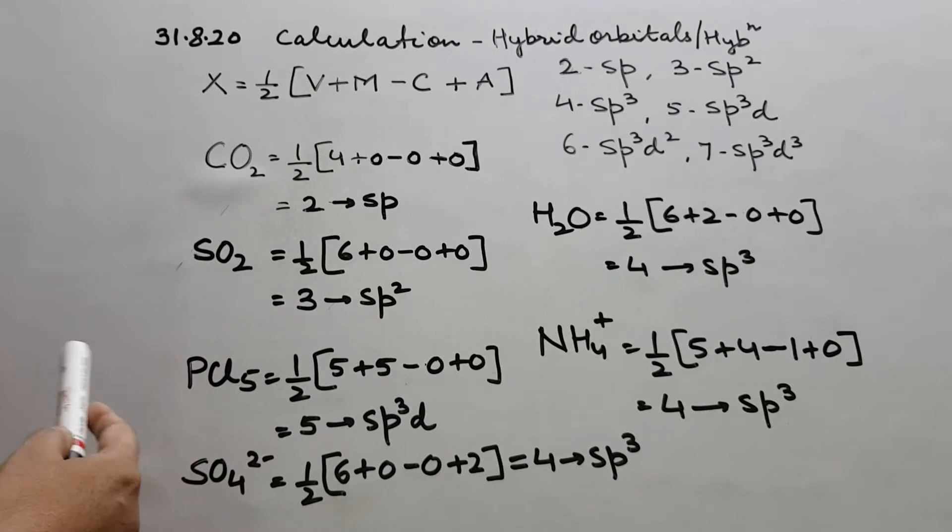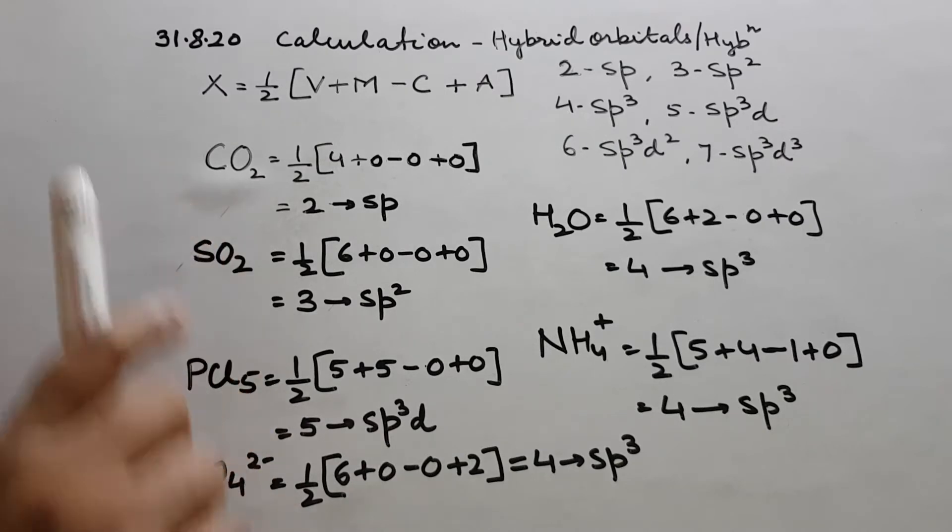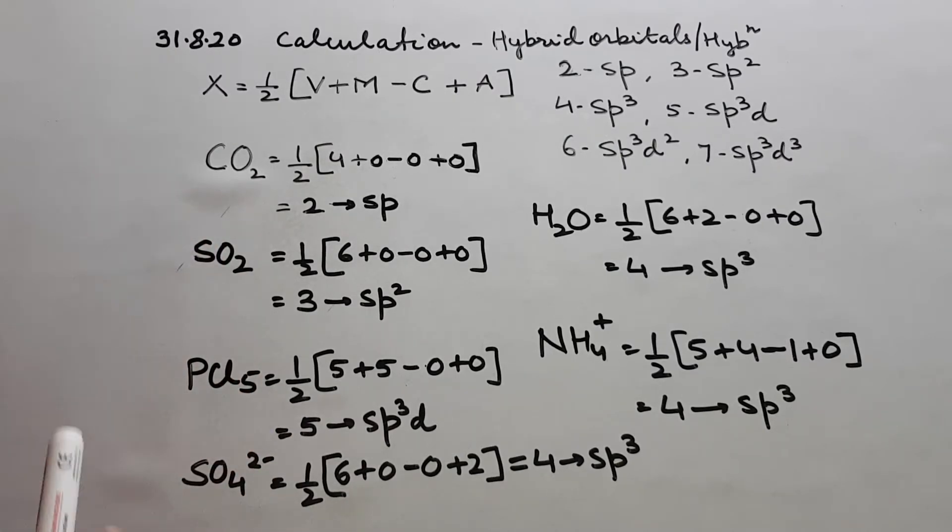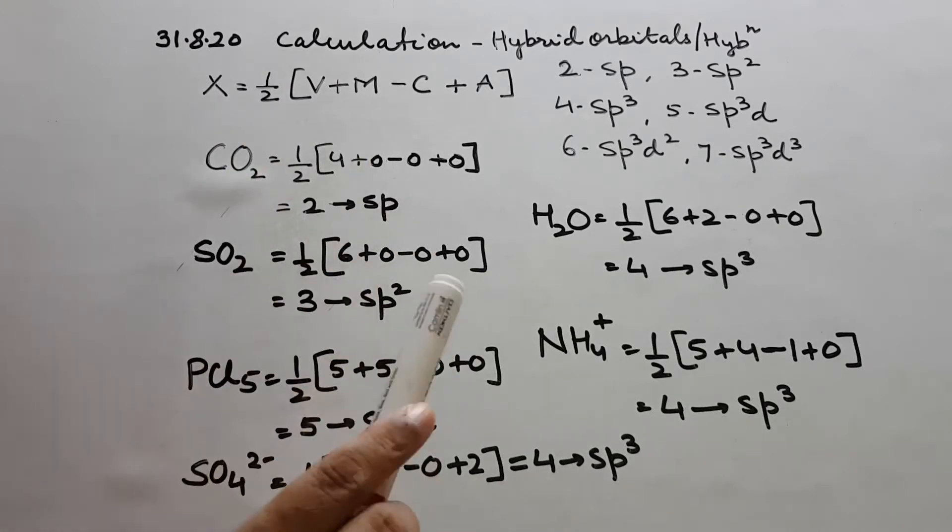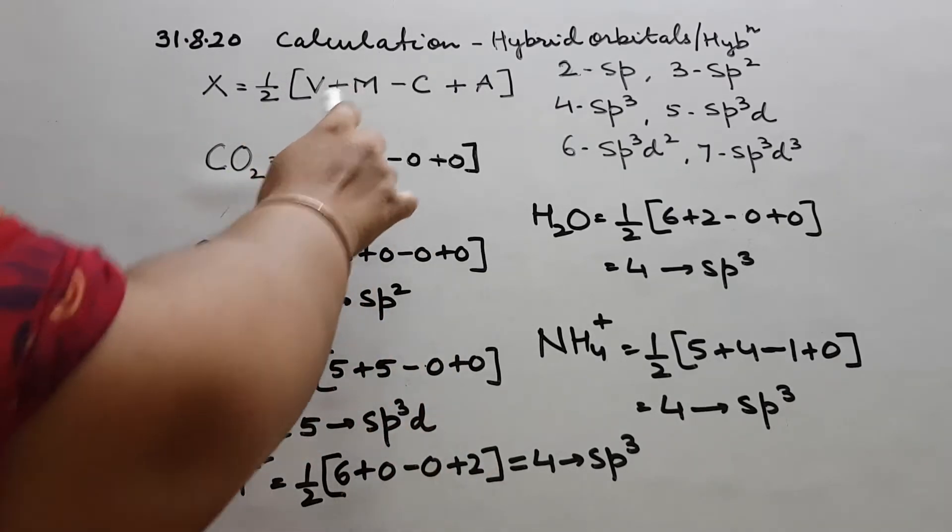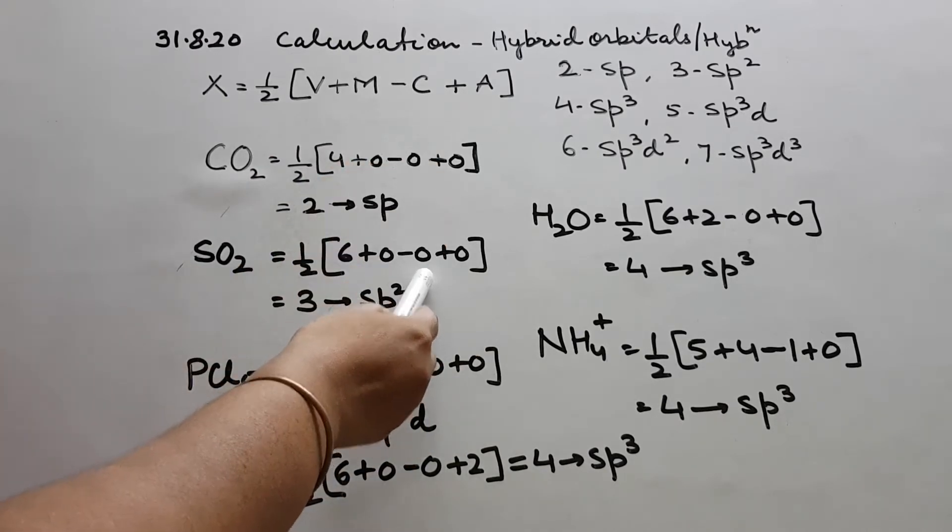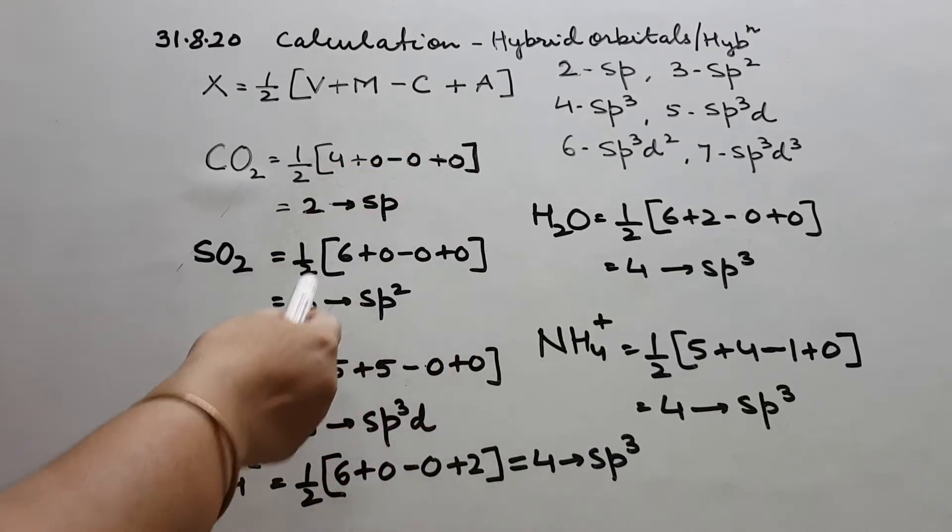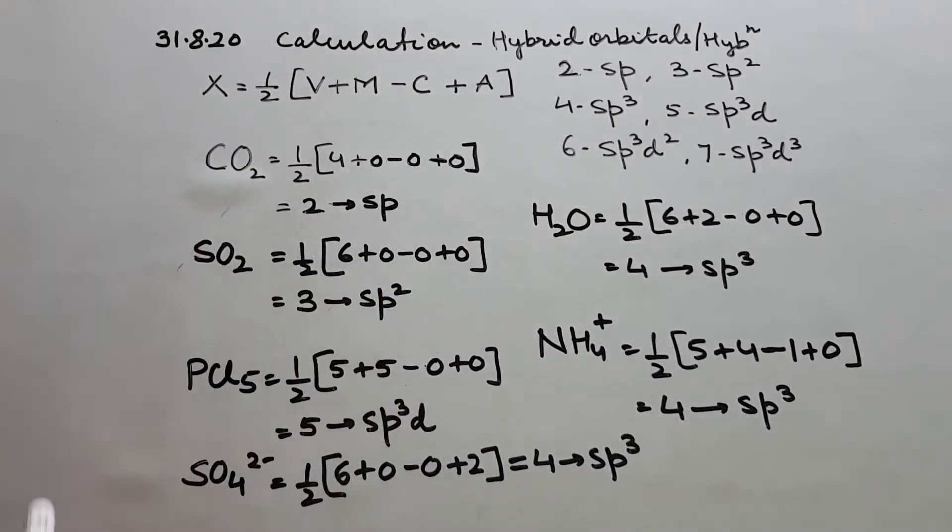Then see here SO2, half. Central atom is S. S has got 6 electrons in the valence shell, so 6 is v here. Number of valence electrons on the central atom. Monovalent atom, no there because it is O, so 0. No charge on cation, no charge on anion. 6 by 2, 3. And when we have 3 we know sp2.